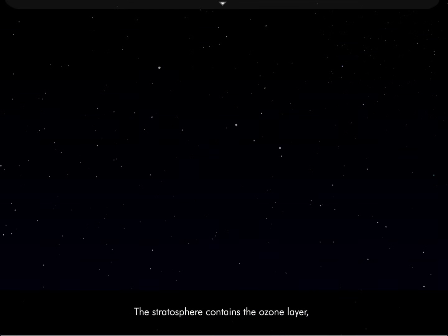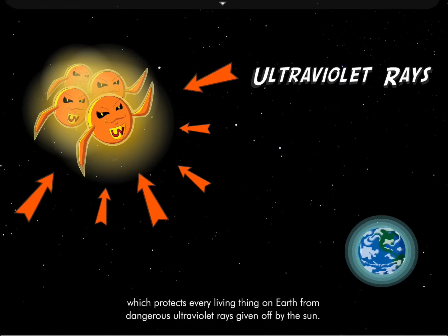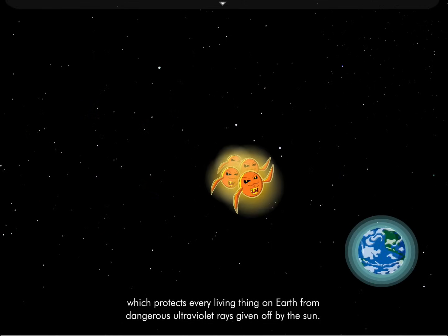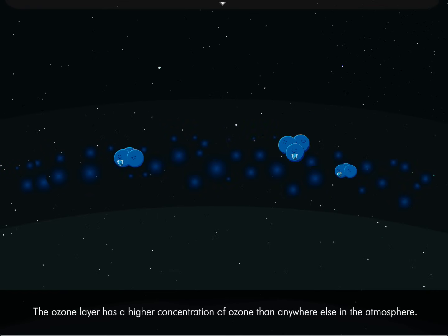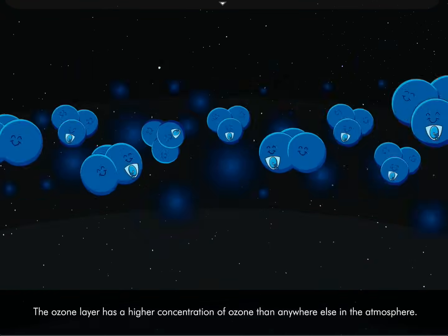The stratosphere contains the ozone layer. It protects every living thing on earth from dangerous ultraviolet rays given off by the sun. The ozone layer has a higher concentration of ozone than anywhere else in the atmosphere.